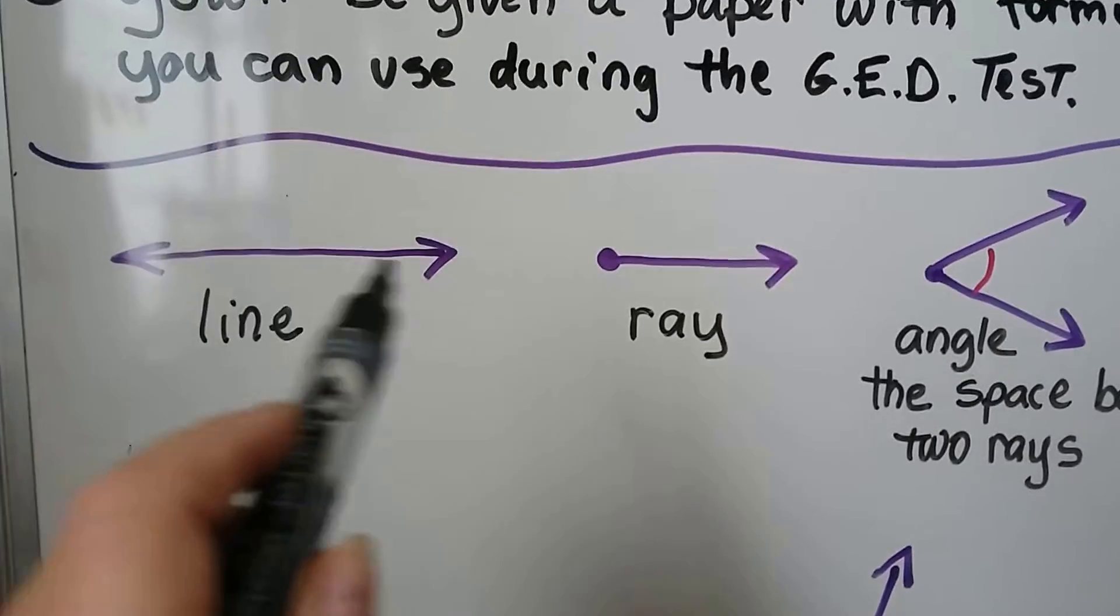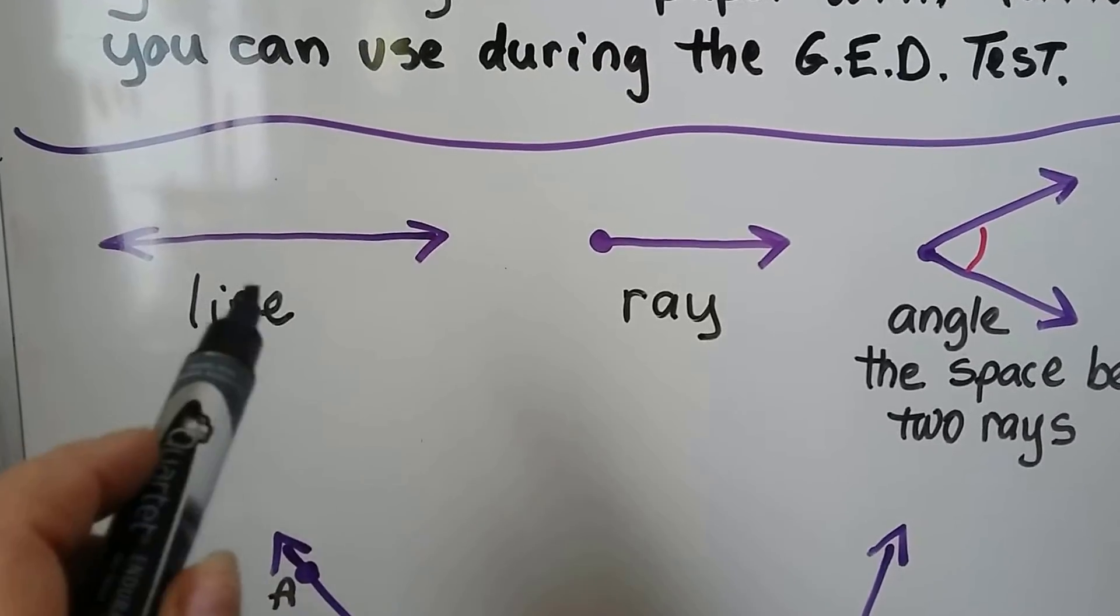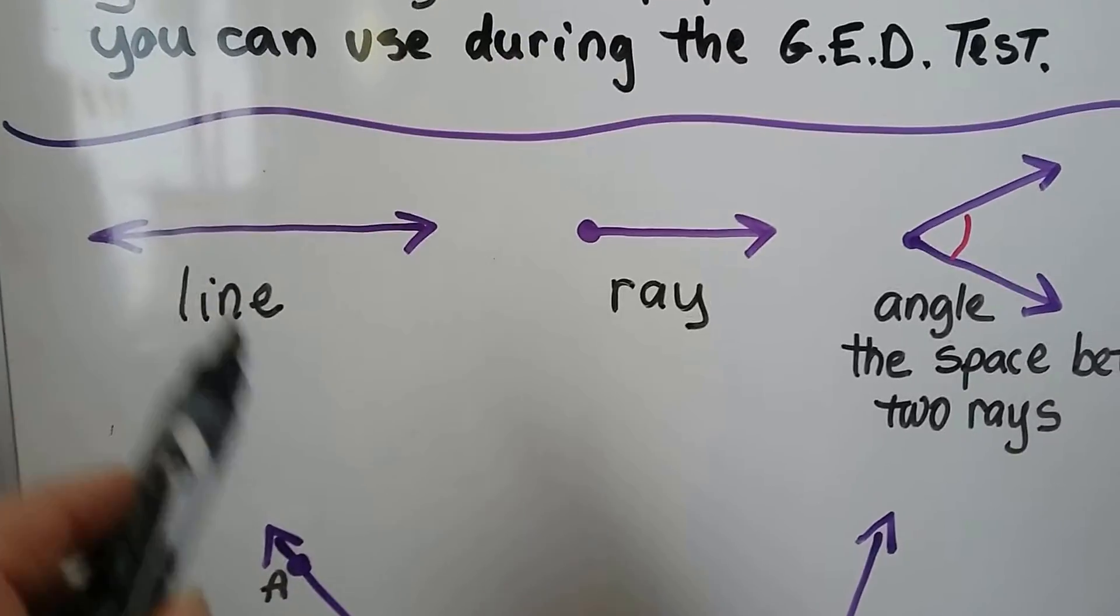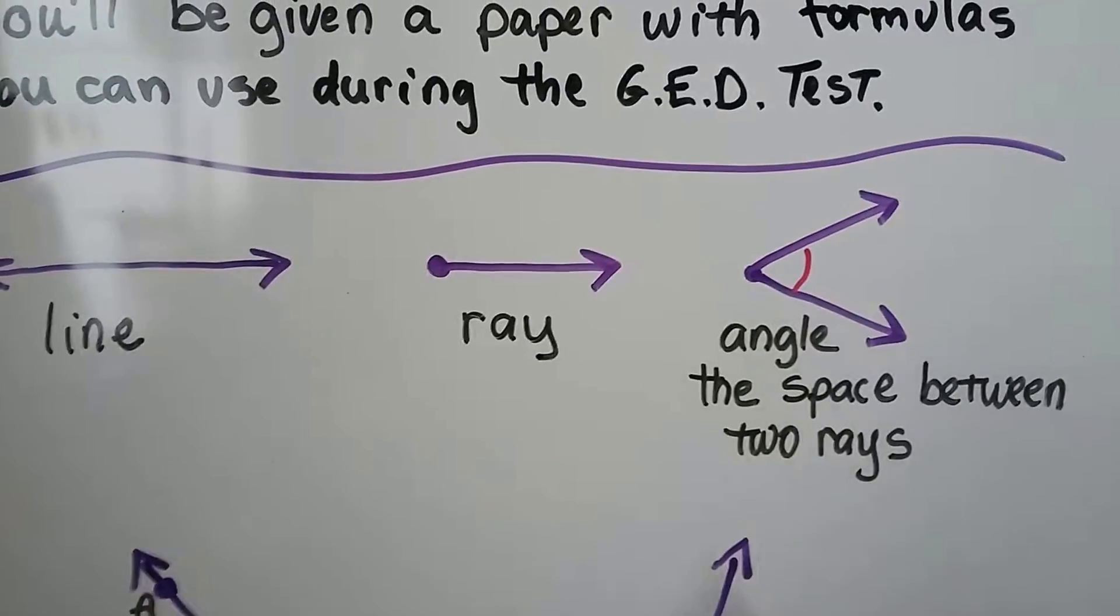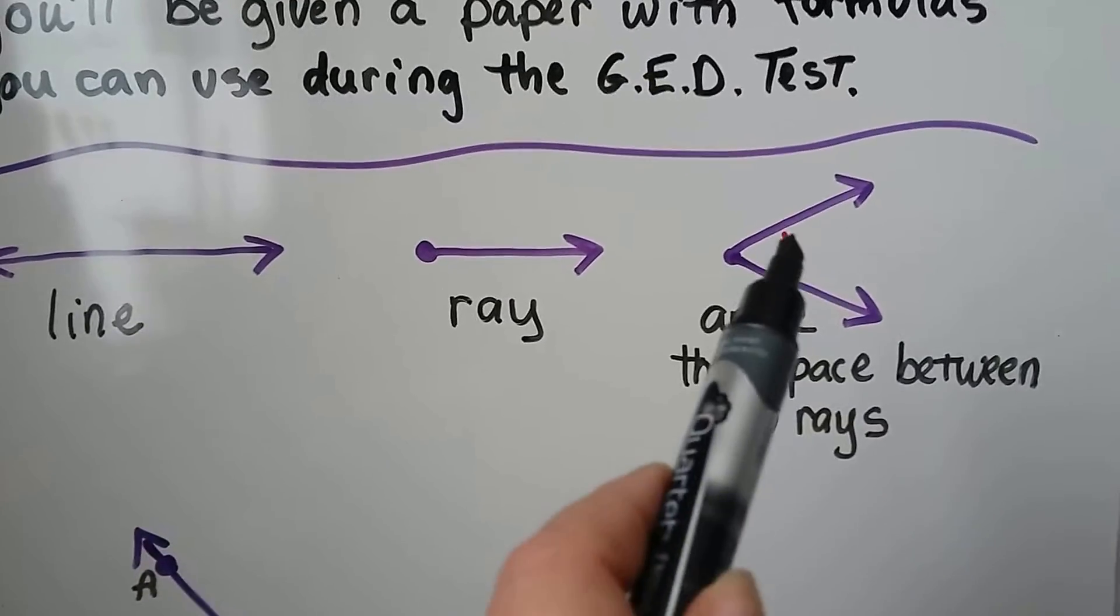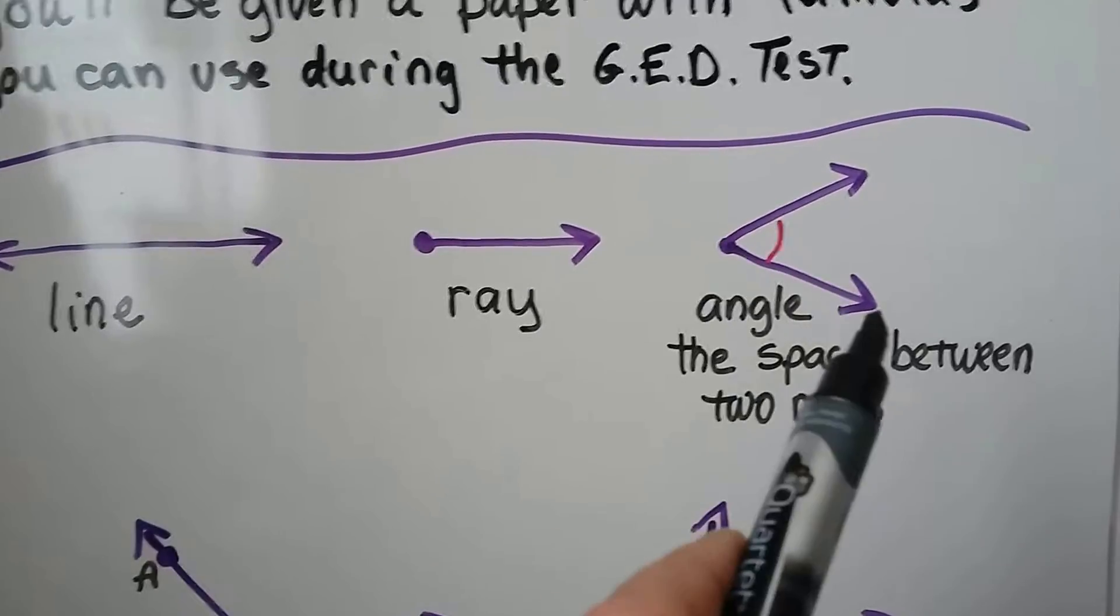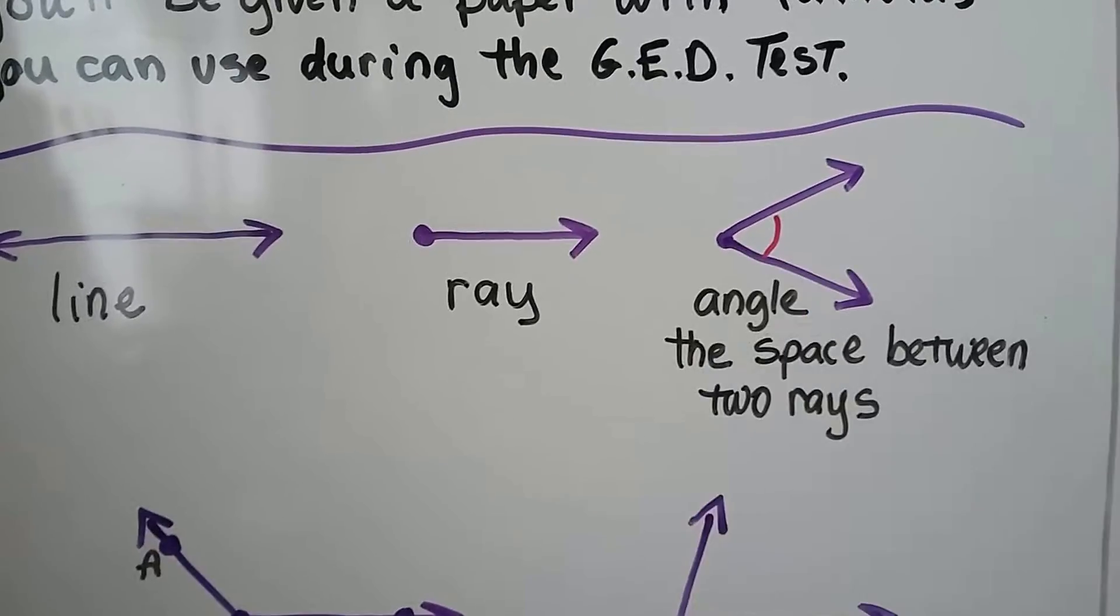When we see a long line with an arrow on each side, that's an actual line. It's like a number line. When you see it with a point and then an arrow, that's a ray. And when you have two rays, we have one here and one here. The space between them is an angle.